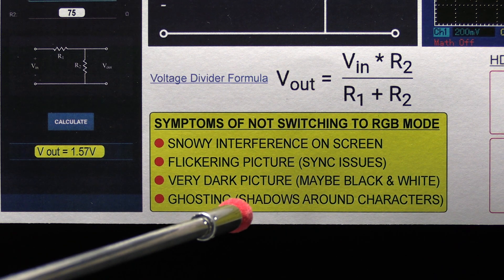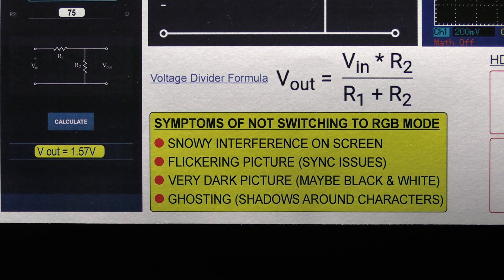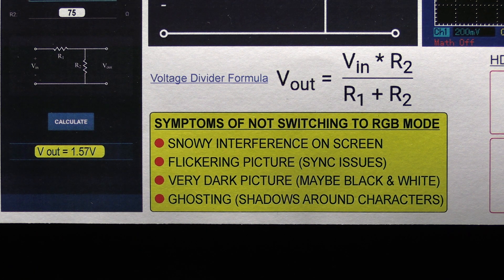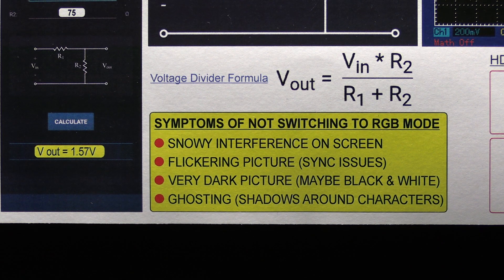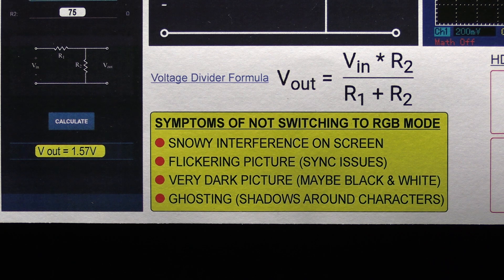And the more common one is ghosting, which is basically shadows around the characters. So you'll get a colour picture. It looks reasonably normal, but not very clear because you've got these shadowing or ghosting around the characters.